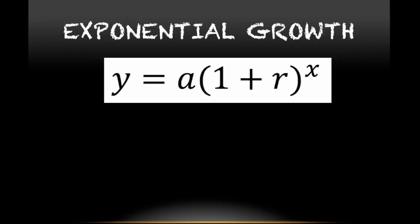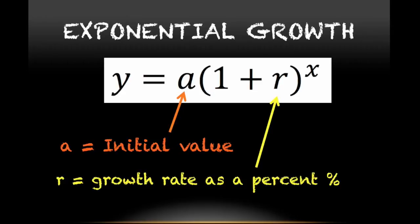To write an exponential growth equation, given a percent of growth, we're going to have to use the equation y equals a parentheses 1 plus r to the x power. In this case, what we need to know is that a represents the initial value or starting point, where r represents your growth rate as a percent.